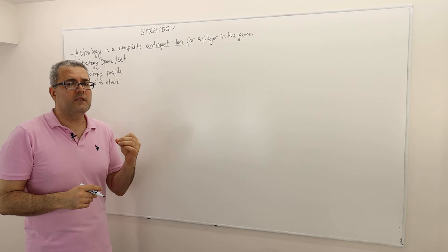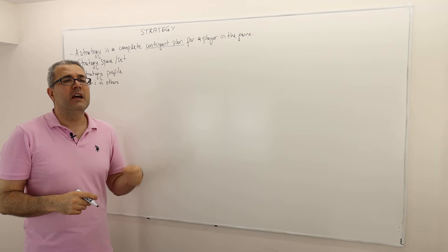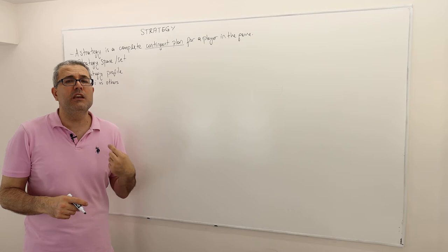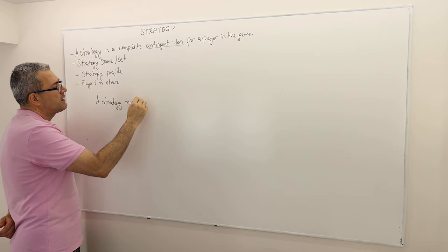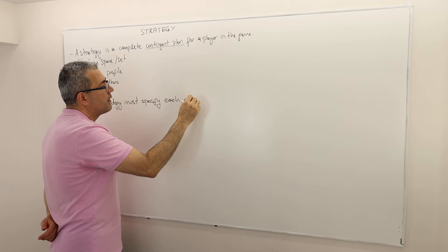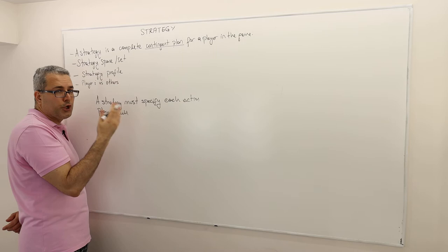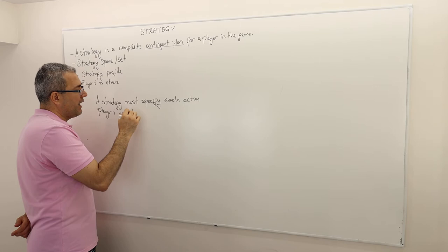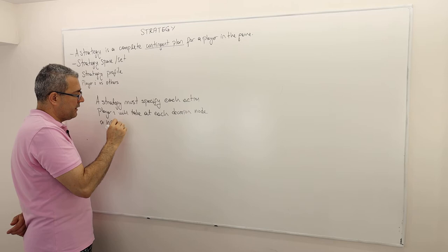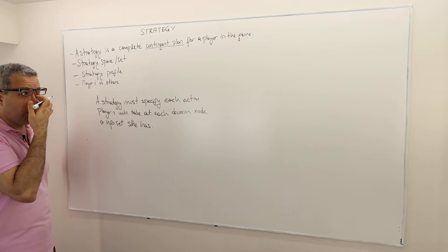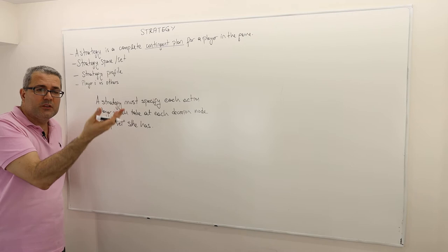It basically tells me the following: a strategy should specify what a player is going to do or how he is going to play in every possible information set or decision note he or she has. So let me say it a bit more formally. A strategy must specify each action player I will take at each decision note or info set, information set she or he has. So this is what we mean by a complete contingent plan.